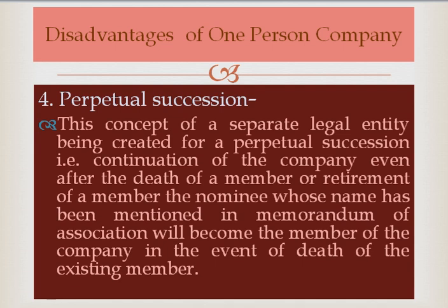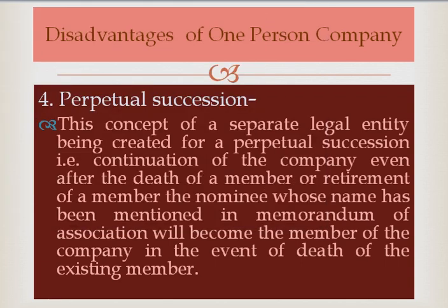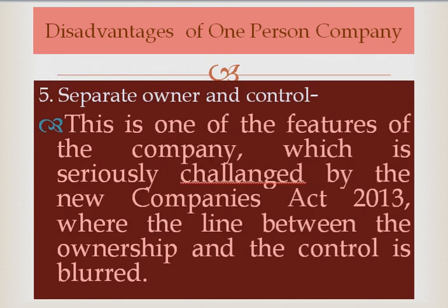Regarding perpetual succession: the concept of a separate legal entity means the company continues even after the death or retirement of a member. The nominee whose name is mentioned in the memorandum of association will become the member of the company in the event of the existing member's death. However, the concept of separate ownership and control is seriously challenged under the Companies Act 2013, where the line between ownership and control is blurred.